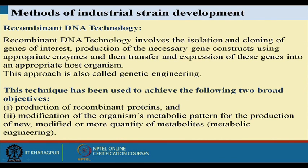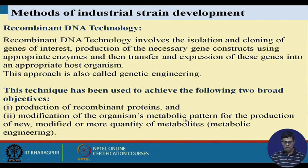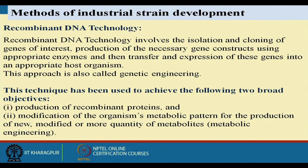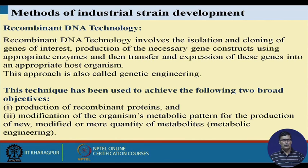Recombinant DNA technology has two broad objectives: production of recombinant proteins such as insulin, and modification of the organism's metabolic pattern for production of new, modified, and greater quantities of metabolites. Through metabolic engineering and recombinant DNA technology, the desired enzyme can be developed and its activity increased to boost the productivity of a particular metabolite. This covers the whole topic of industrial strain development, improvement, and preservation.